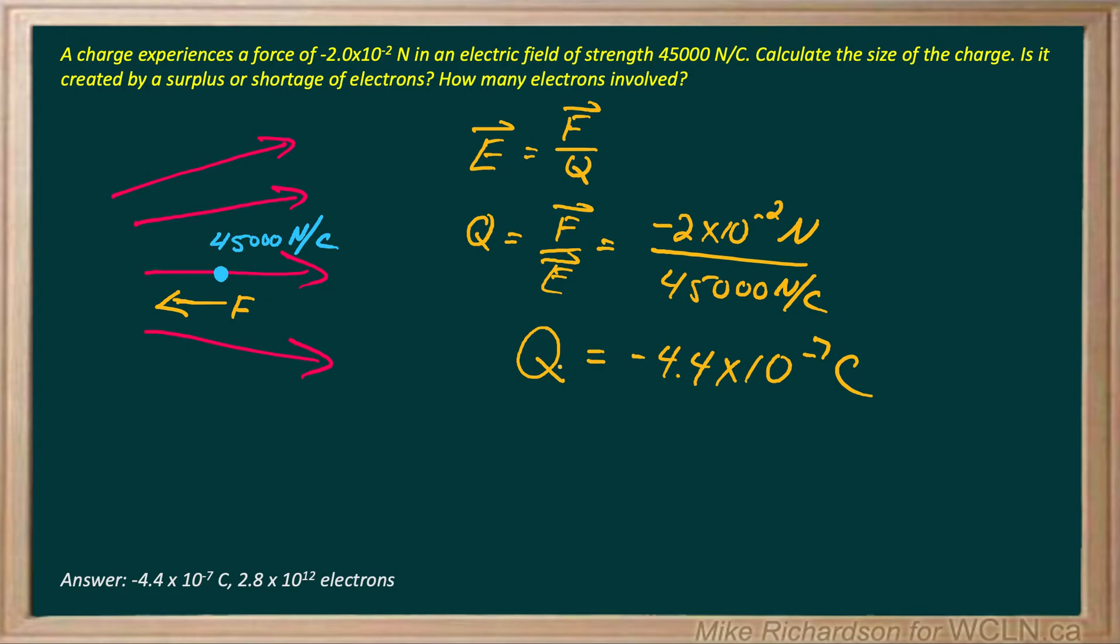Now let's make sure the negative makes sense. I'm going to go back to my pink lines. If I'm imagining my electric field is positive, in other words pointing to the right, we know that the field lines always point away from positive and towards negative.